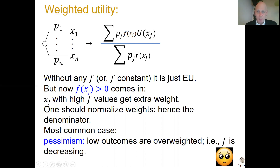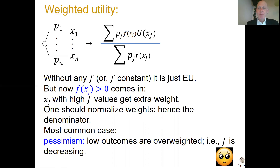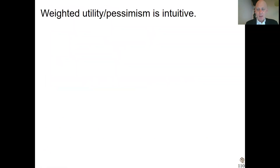The most common case is pessimism. That means low outcomes receive more attention than high outcomes — that means f is decreasing. Then in every convex combination, when you evaluate the lottery, you pay more attention to the low outcomes than the high outcomes, so you come out relatively lower. That's empirically the prevailing case, more than any other thing.